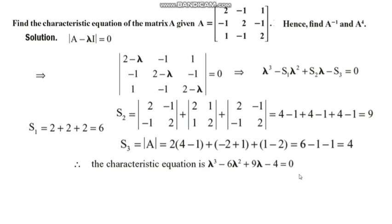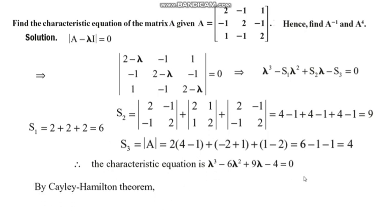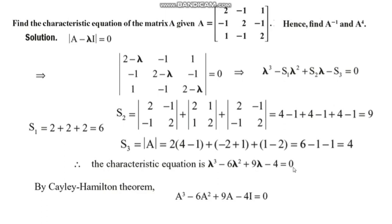Our main objective is to find the inverse of the matrix and A⁴. According to the Cayley-Hamilton theorem, every square matrix satisfies its own characteristic equation, meaning lambda is replaced with matrix A, the constant 4 is replaced with 4I, and 0 is replaced with the null matrix.